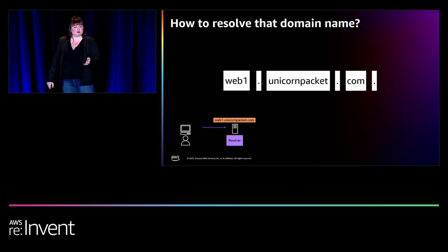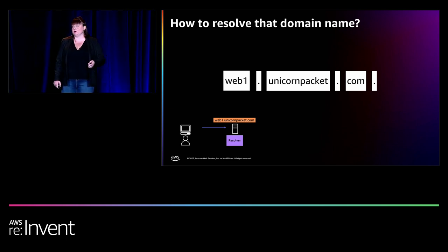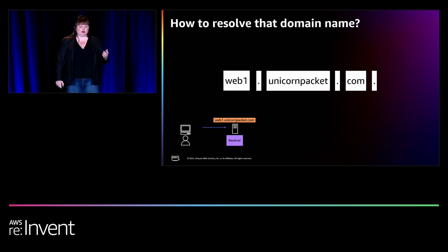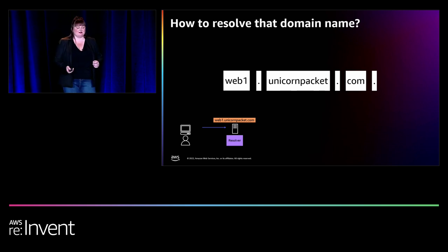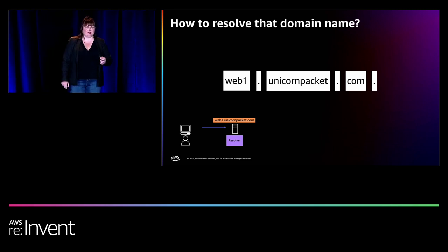A DNS resolver is typically managed by your ISP — internet service provider — or a corporate network. Its job is to act on behalf of the client, communicate to different servers to find the IP address of the domain name you typed in. It will then cache that information and return the IP address back to the client.